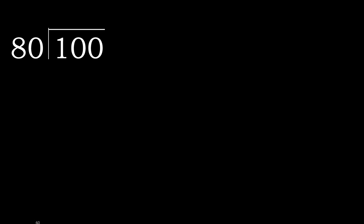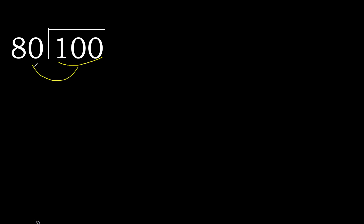100 divided by 80. 1 is less, therefore next. 10 is less, therefore next. 100 is not less, therefore we work with 100. 80 multiplied by which number is nearest to 100 but not greater? 80 multiplied by 2 is greater. 80 multiplied by 1 is 80.